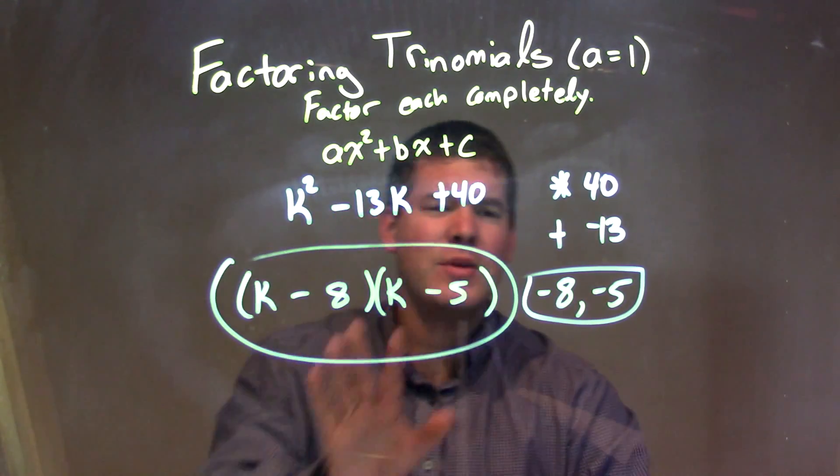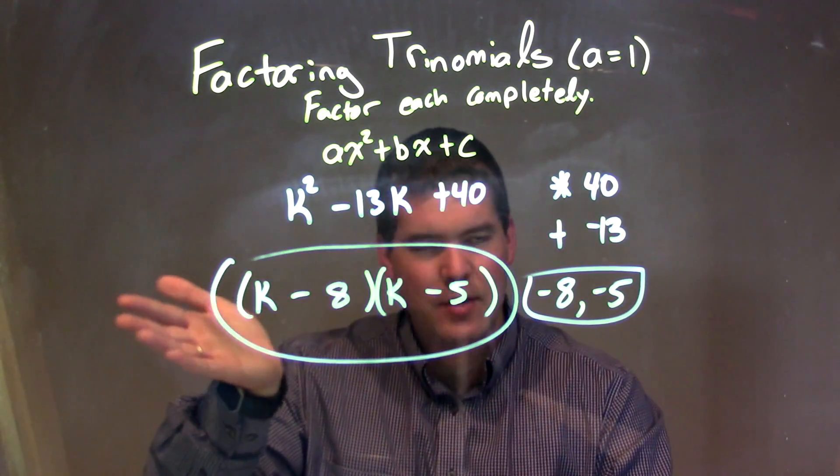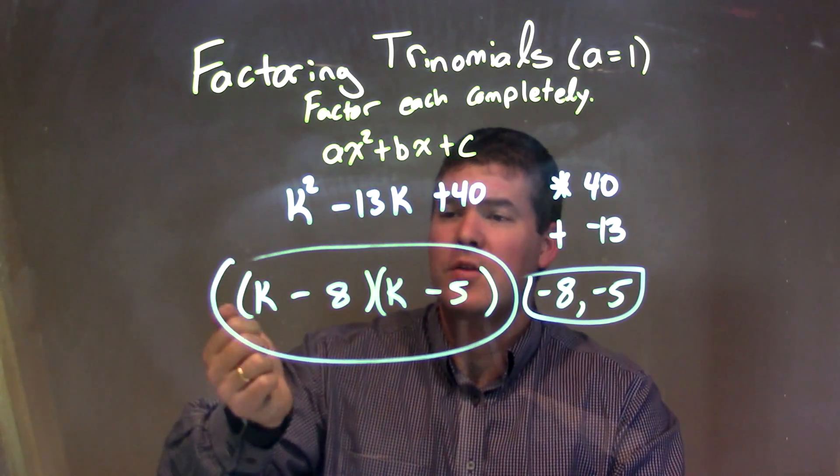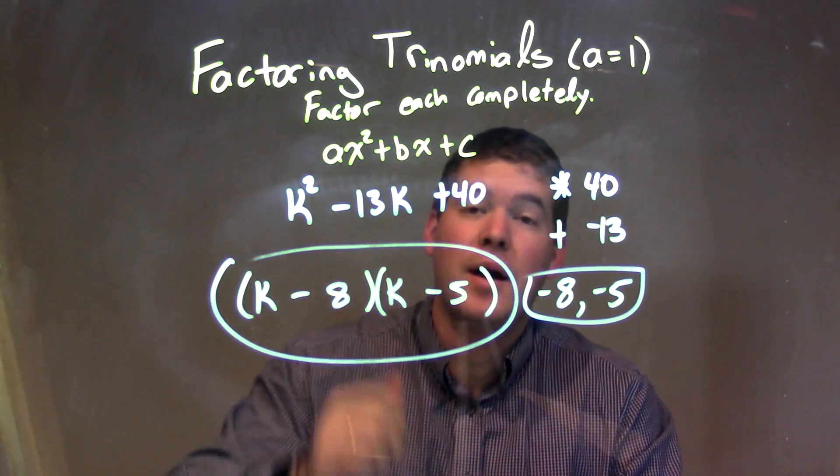Our final answer here, and again, it really doesn't matter, it could be k minus 5 times k minus 8, but anyway, our final answer here is k minus 8 times k minus 5.